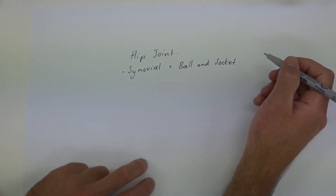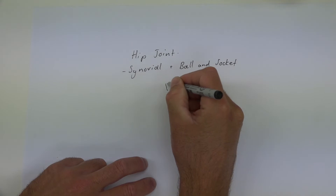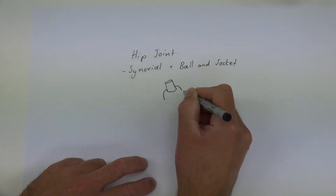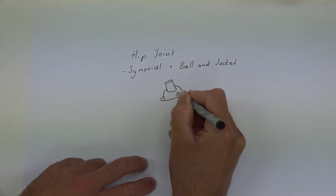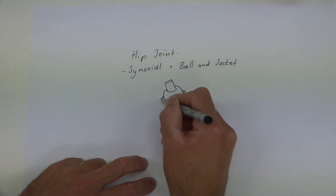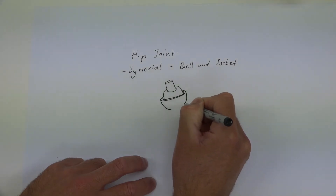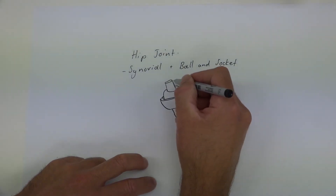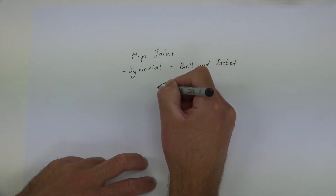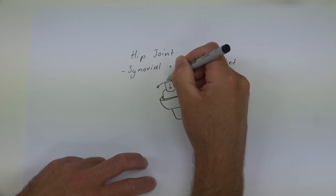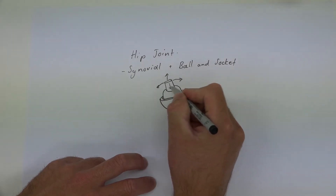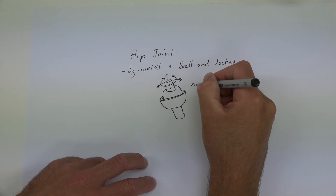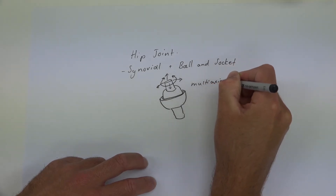A quick picture of a ball and socket joint would show a stem connecting to the ball, with the socket fitting perfectly around the outside. This type of joint can move in pretty much any direction — forwards and backwards, to each side, and it can also rotate. This allows it to be a multi-axial type joint.